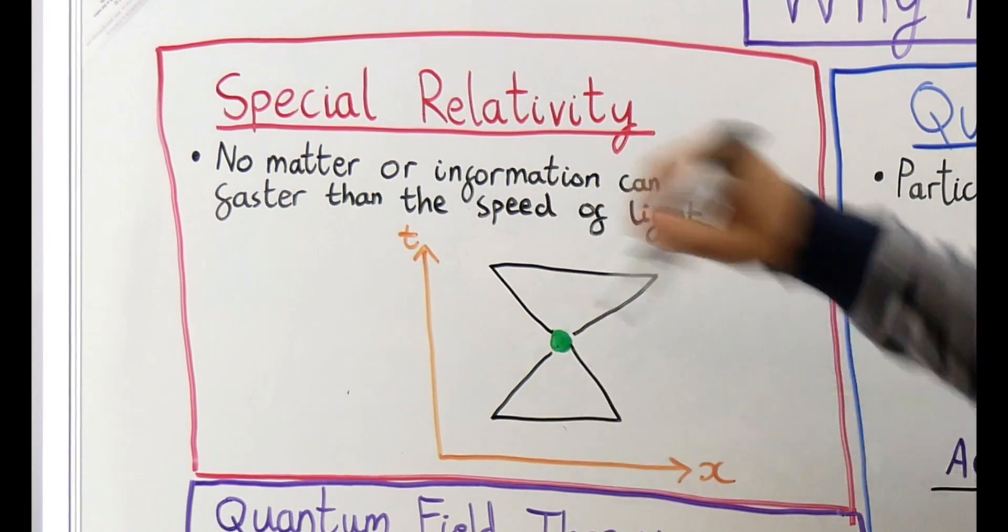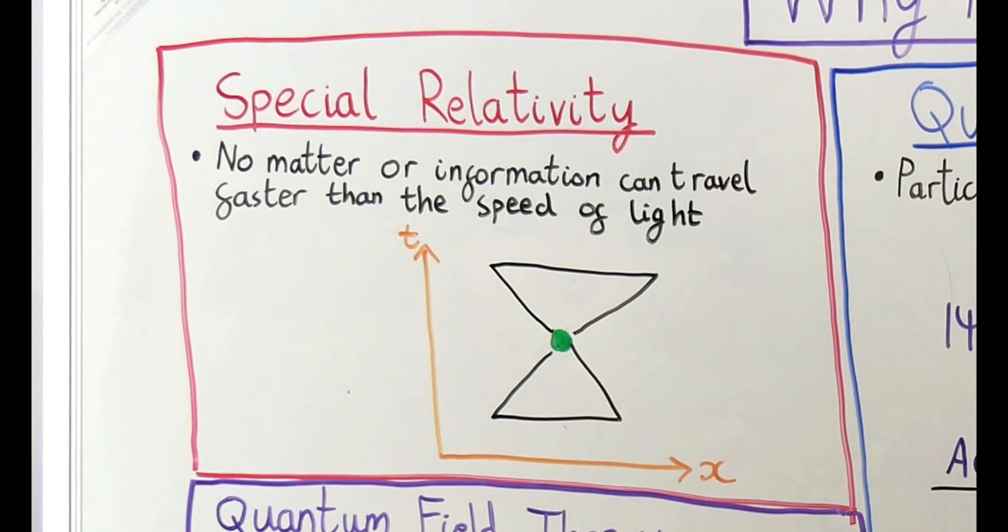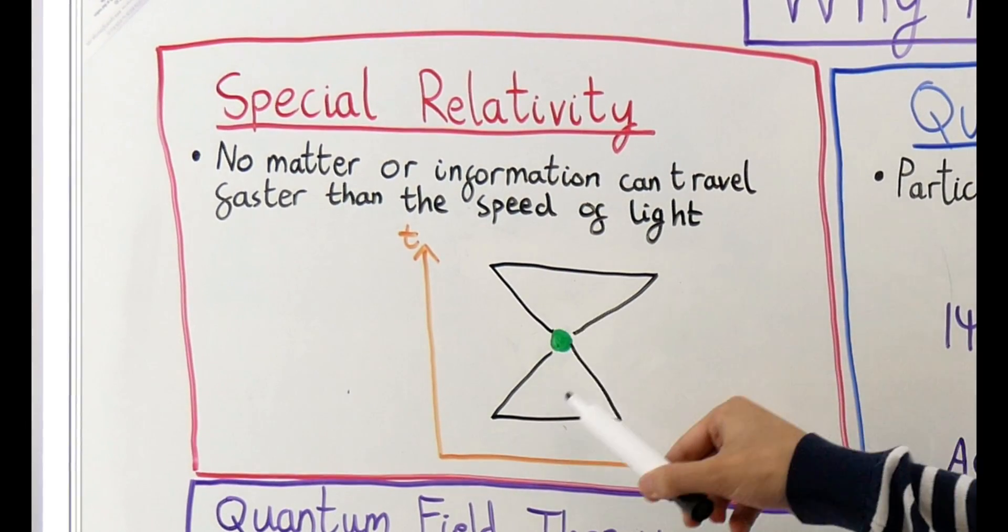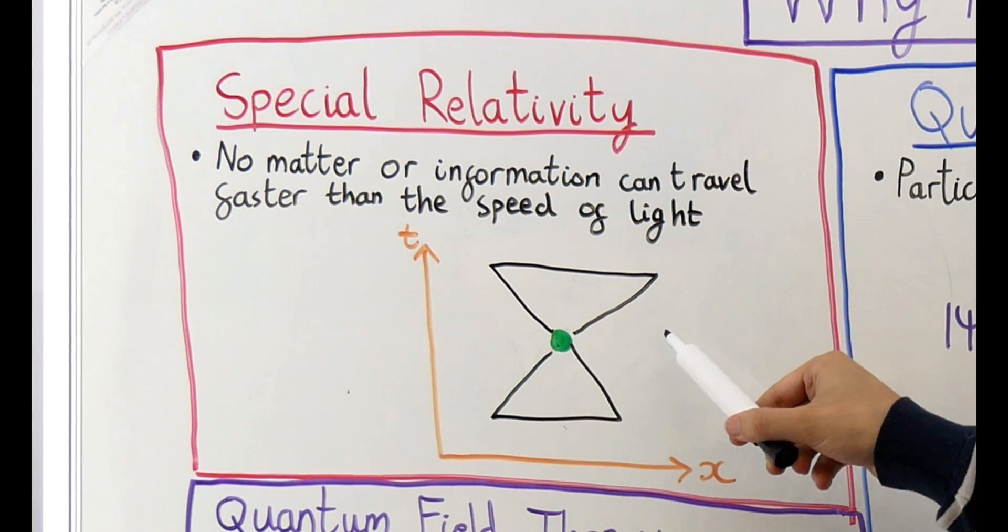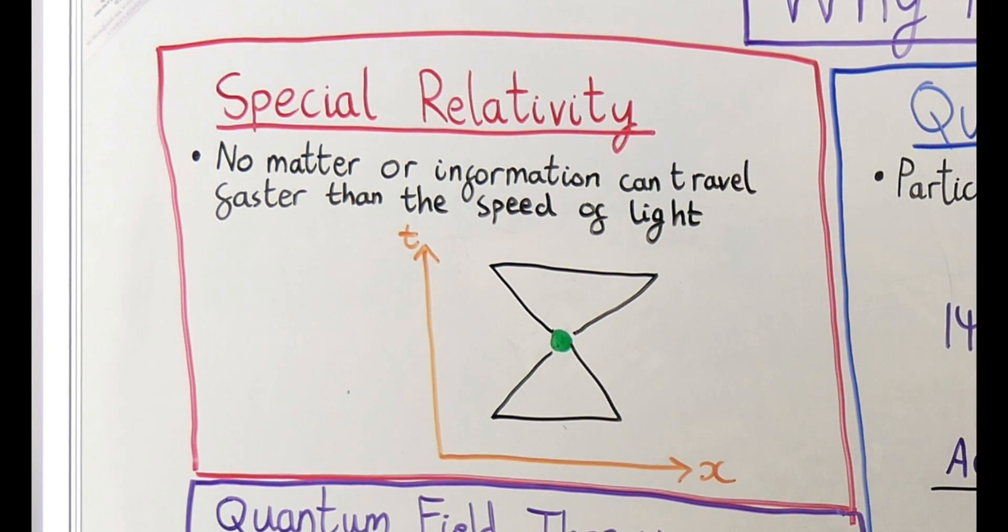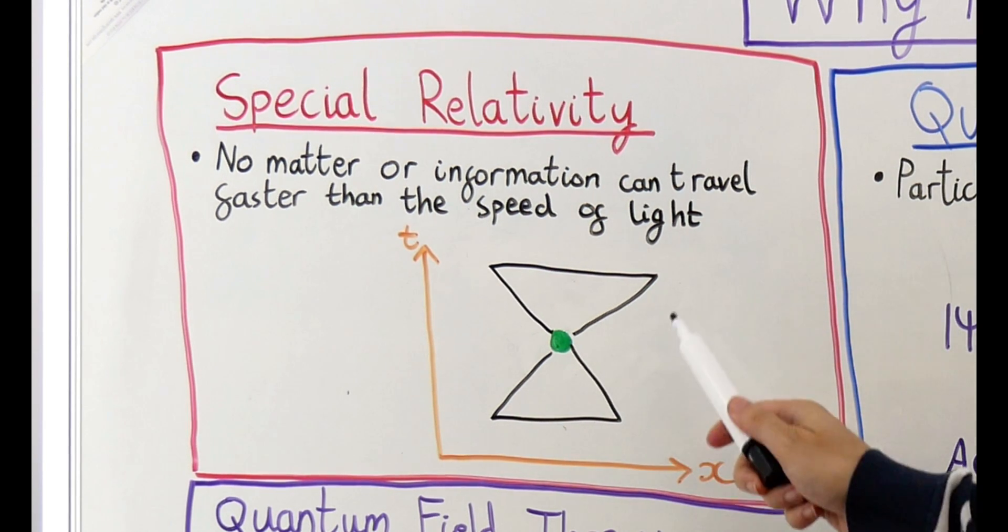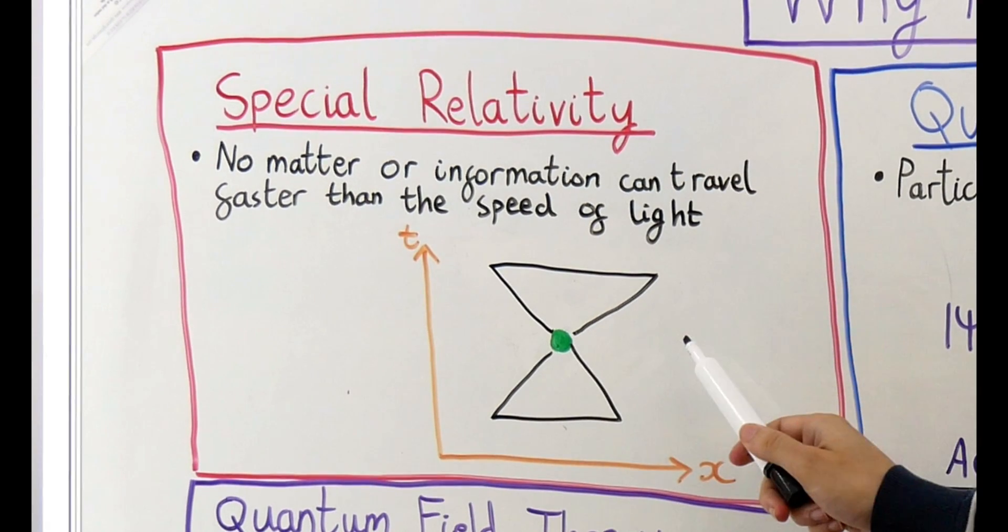The light cone makes it clear where the particle could reach in the future and where it could have been in the past. The particle can get to anywhere inside its light cone but it can't get outside. This is because to end up outside the light cone the particle would have to travel faster than the speed of light. Outside the light cone is a forbidden region for the particle to be in.